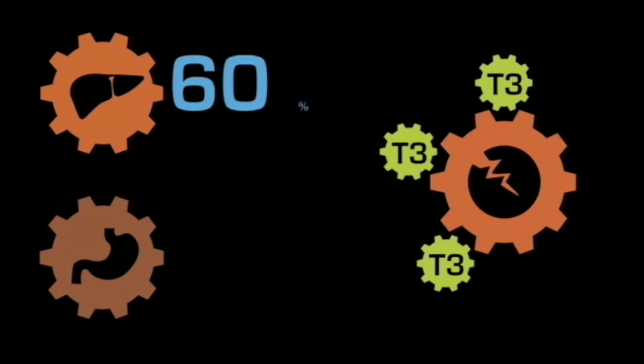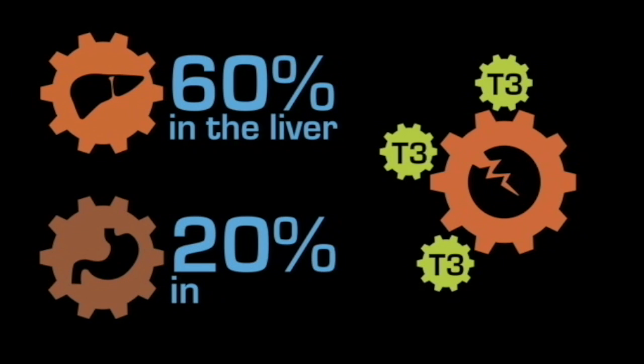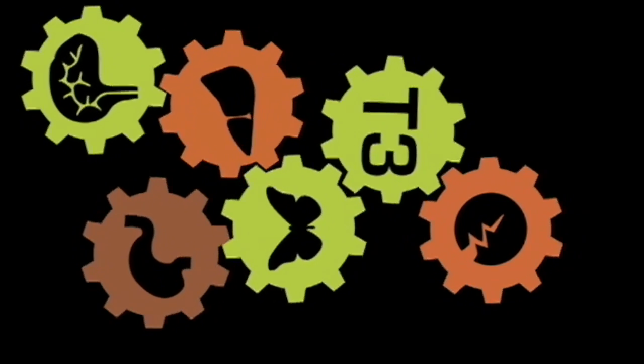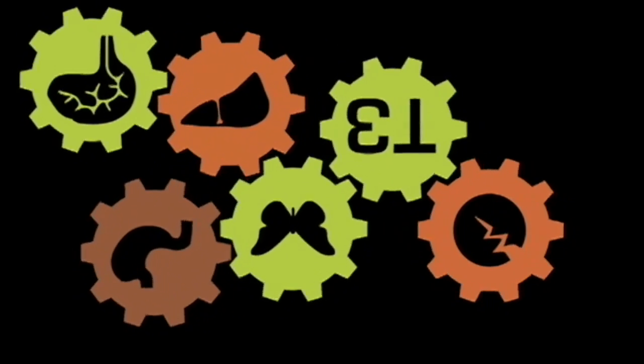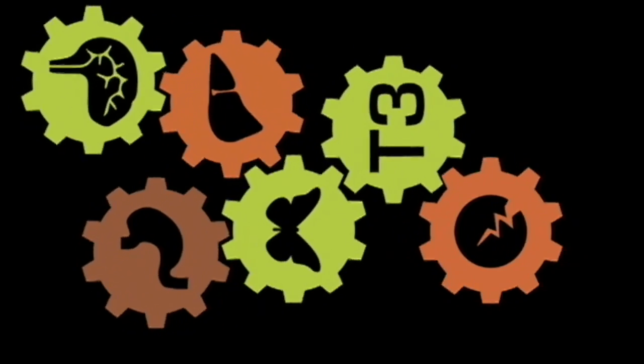60% of the T4 to T3 conversion takes place in the liver and another 20% of the T4 hormone is converted to usable T3 right in your gut. Hopefully, you're starting to see how all of the systems in your body work intricately together and how important the T3 hormone is.